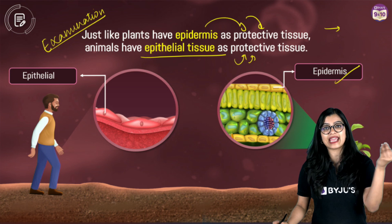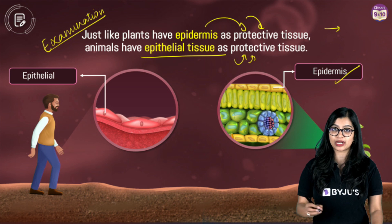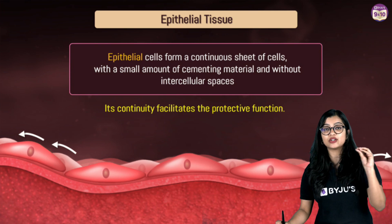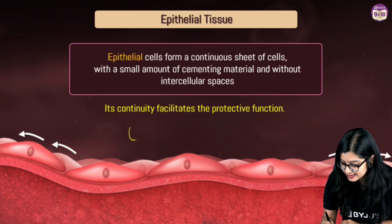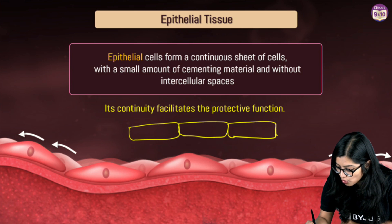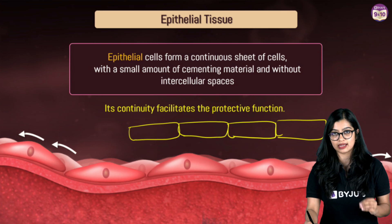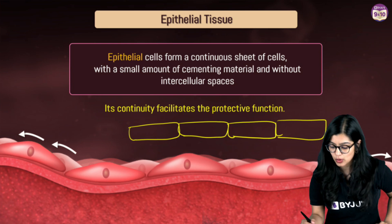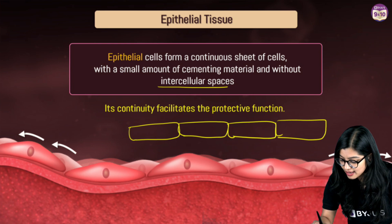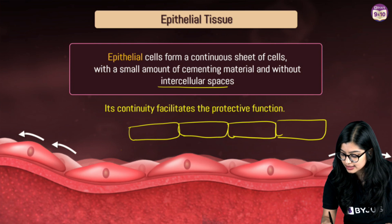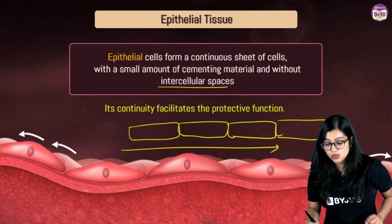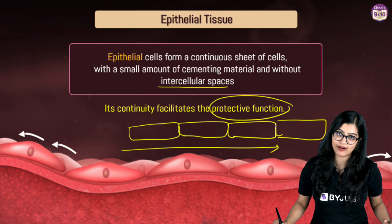Epithelial tissue is a protective tissue made up of a continuous sheet of cells arranged one after the other with no intercellular spaces between them. They are arranged continuously to form one continuous structure, which also contributes to their protective function.